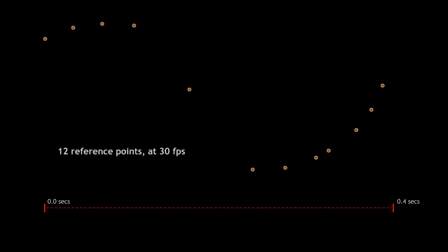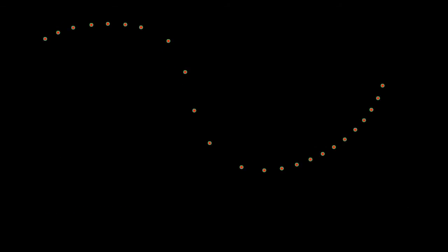We have only 12 reference points covering the same area on the screen, and these dots are not the best for interpolating and generating the curves. If we double the frame rate, we can get double the amount of points, which are definitely much better for generating the curves. This is why it's so important to have a good frame rate.